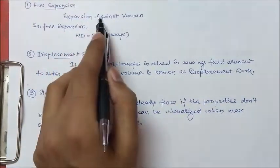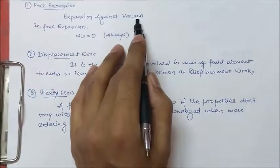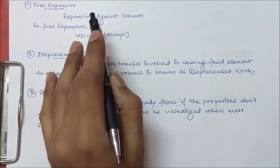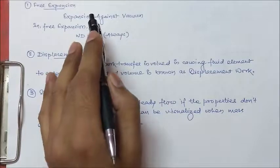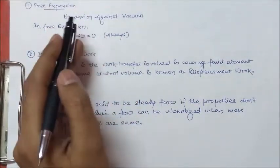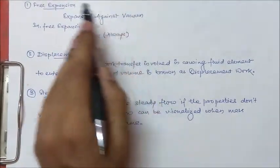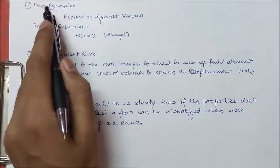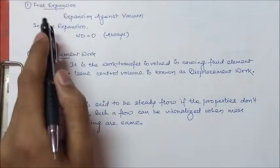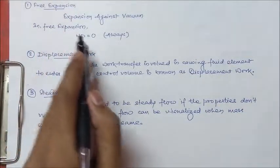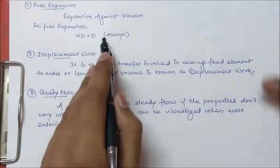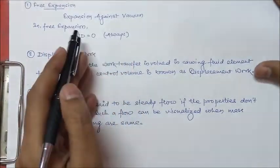Let's start with free expansion. Free expansion is the expansion against vacuum. It is nothing but when a gas or any substance expands against vacuum, that type of expansion is known as free expansion, and in free expansion the work done is always zero.